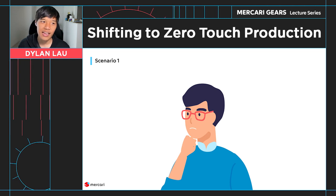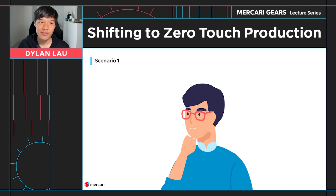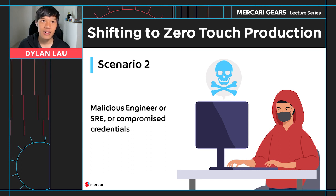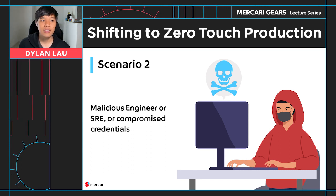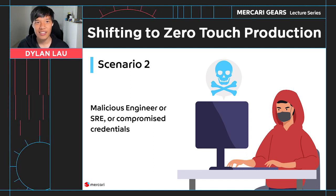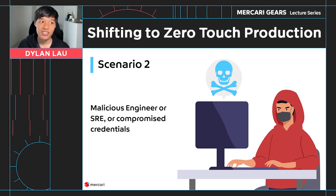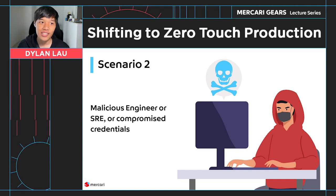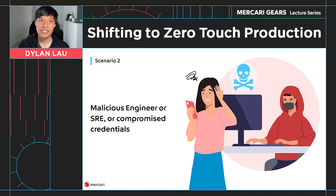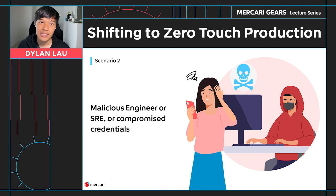We're all human, and humans make mistakes. But because we are prone to making these mistakes, we need to prevent ourselves from making them in the first place. Imagine another scenario: an engineer or SRE's credentials are compromised, or perhaps they're feeling a little bit dissatisfied and malicious. Because they have write access in production, they can easily do whatever they want, including taking a service down. In the case of a malicious actor, they may also know how to take a service down completely undetected.